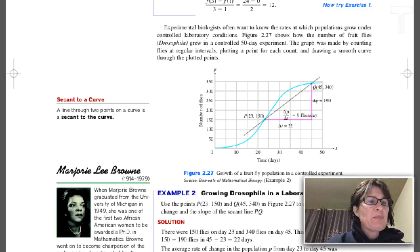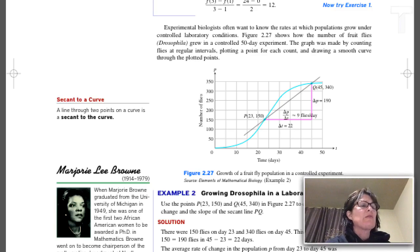We're asked to compute the average rate of change using the points from the graph. Point P is (23, 150) and point Q is (45, 340).